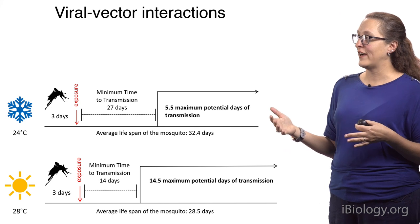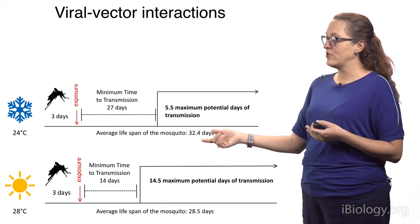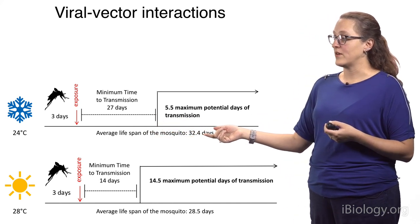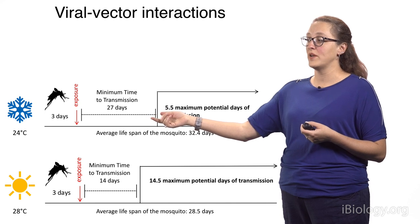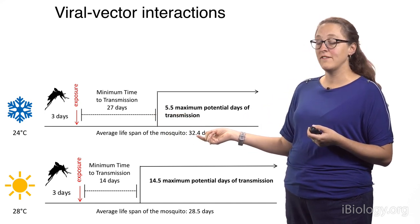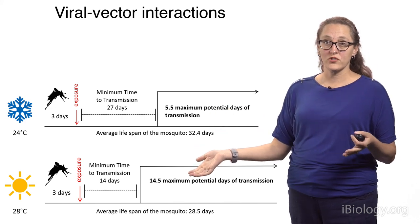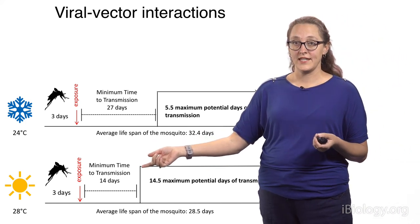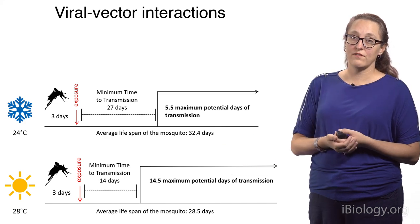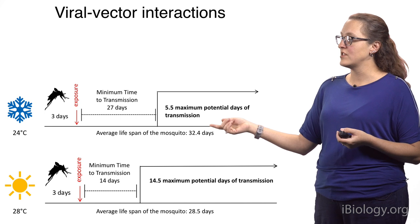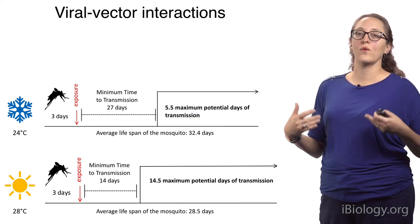In the previous talk, I showed viral-vector interactions and how the environment may affect these — to demonstrate that when we take into account not only transmission time but the lifespan of the mosquito as well, we see how differences in transmission fall out. At lower temperature, we have a minimum transmission time of 27 days and a mosquito lifespan of 32.4 days, giving a maximum of 5.5 potential days of transmission. At an optimal temperature of 28°C, the minimum transmission time is 14 days, with a lifespan of 28.5 days, giving 14.5 days of maximum potential transmission — showing how small changes in EIP and mosquito lifespan affect transmission potential.